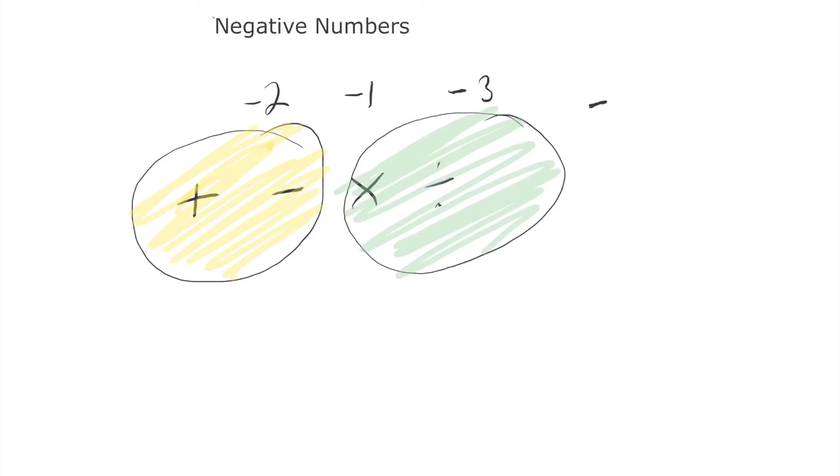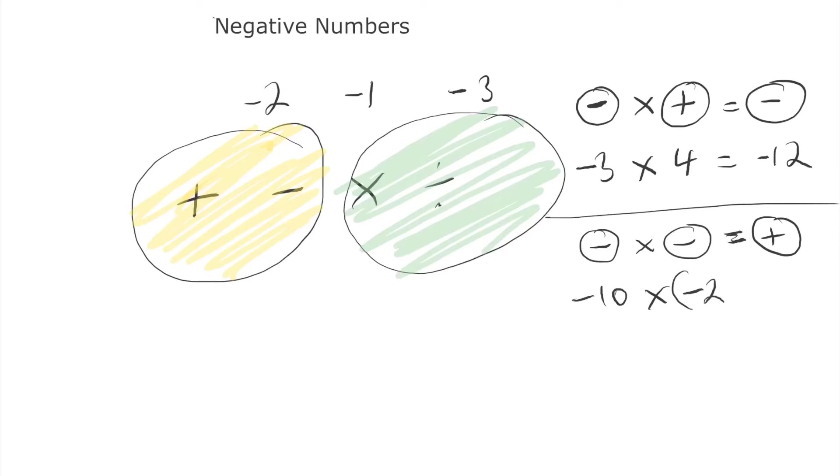So if we have a negative number and we multiply it by a positive number, the answer will always be negative, so it will have a minus sign in front. So if we do minus 3 times 4, it will be minus 12. Now, if we have a negative number times another negative number, it becomes a plus. For example, minus 10 times minus 2, and you'll often see it written in brackets, to bring clarity to the fact that there is an operation in between. So minus 10 times minus 2 would be 20, because when you multiply a negative with another negative, it becomes a positive.